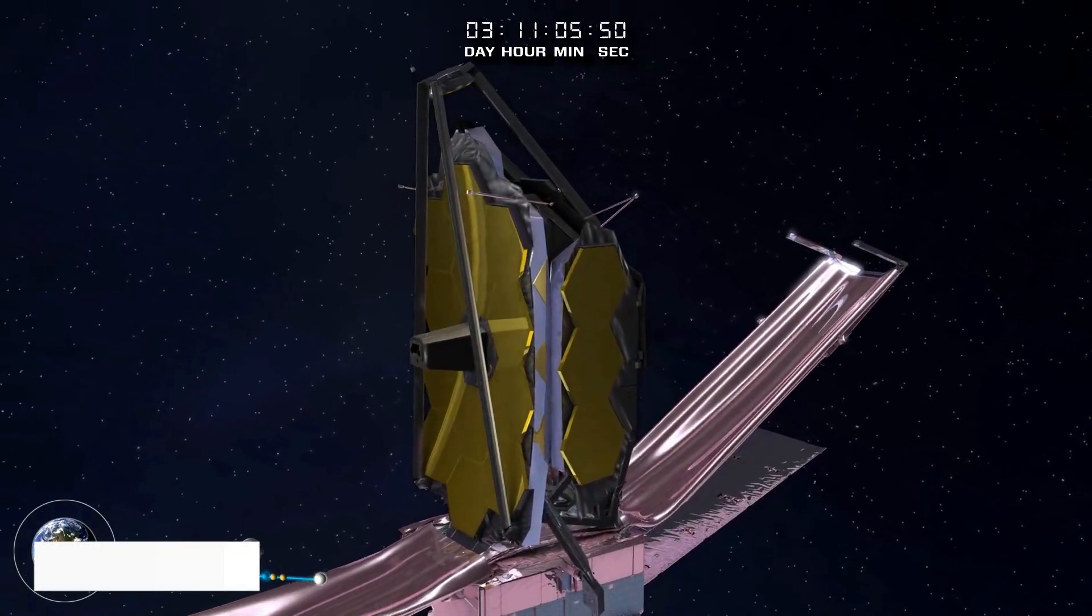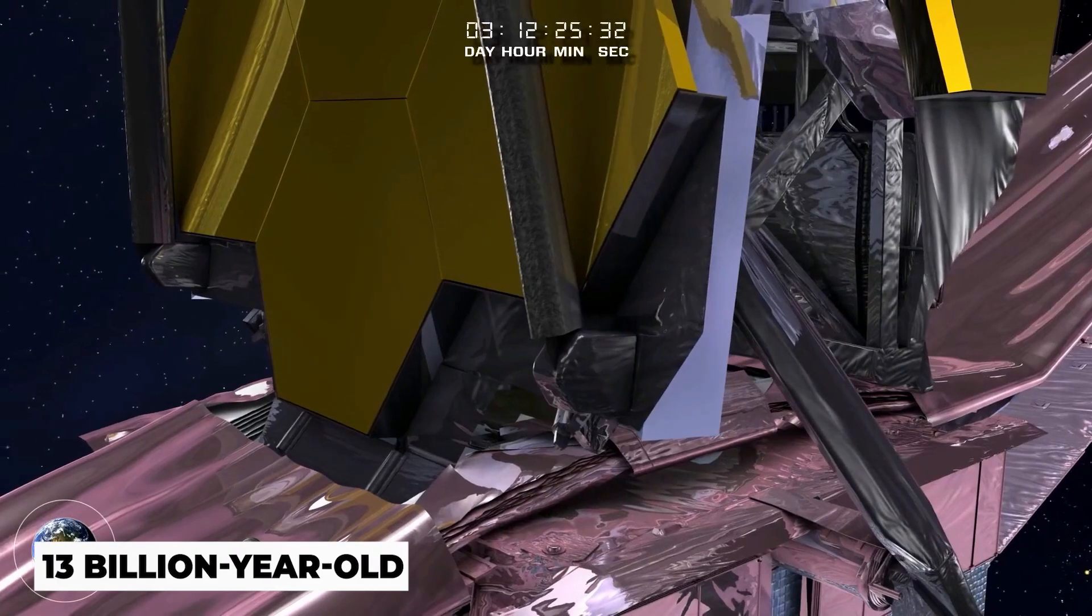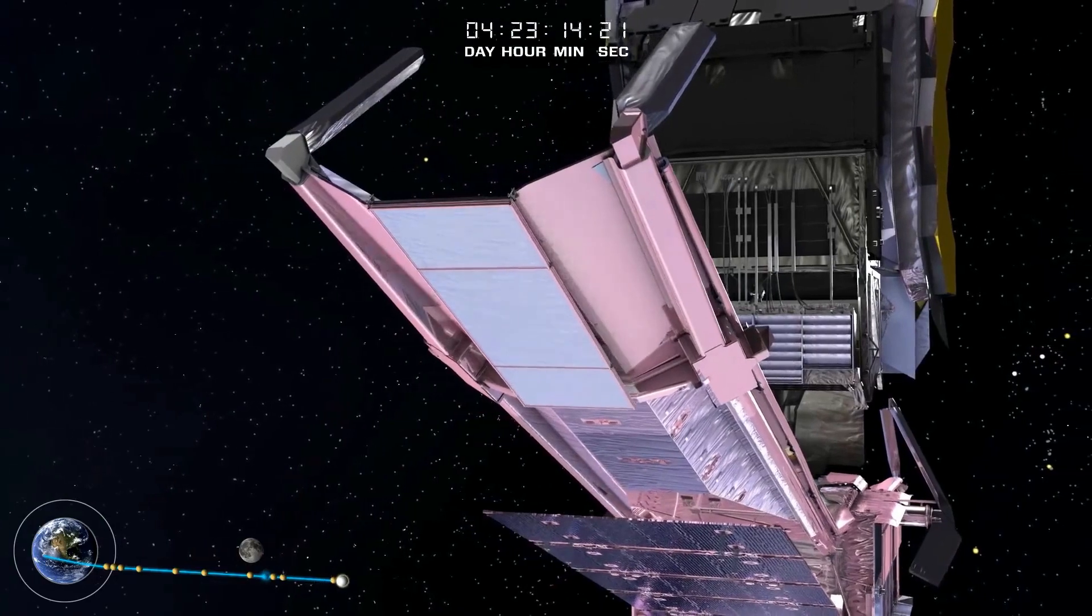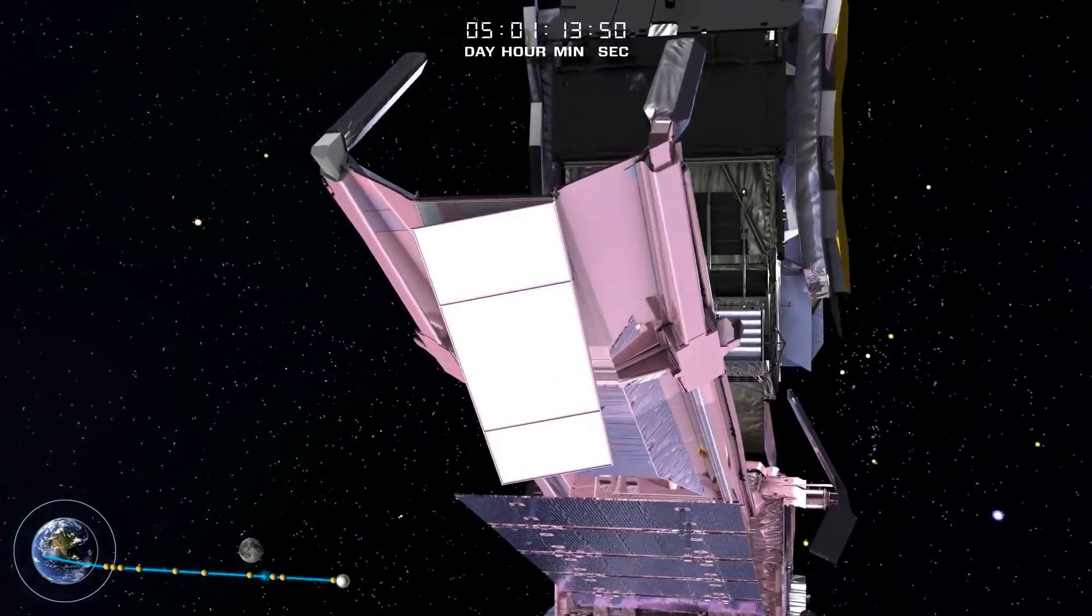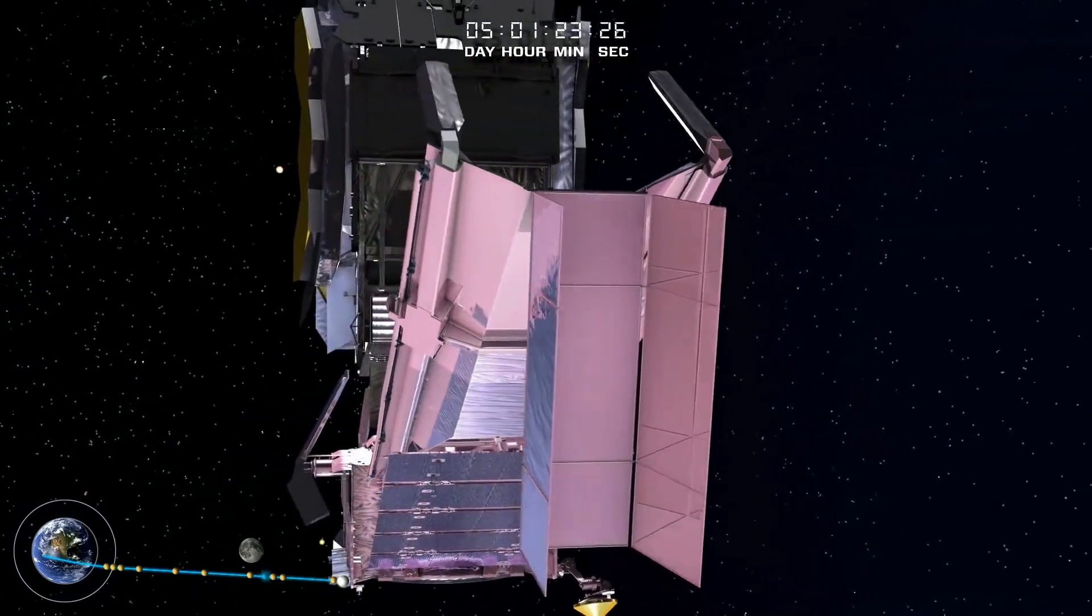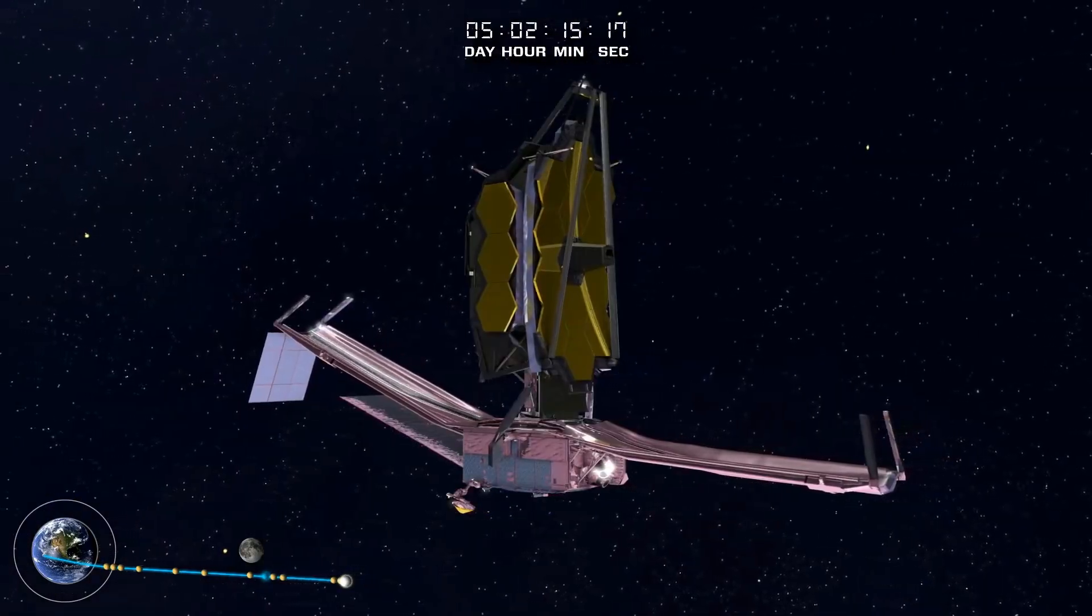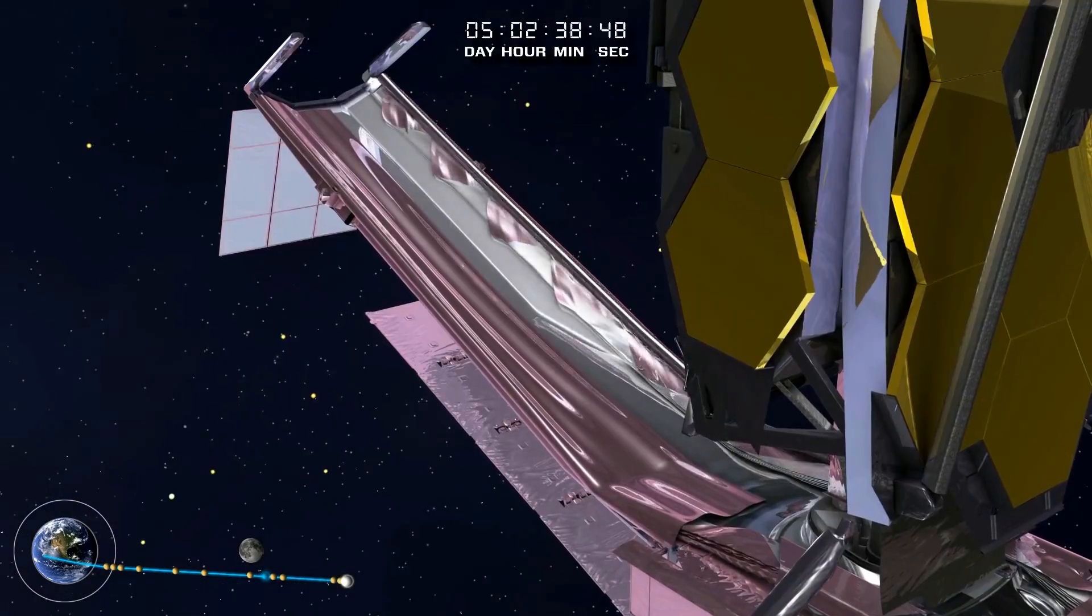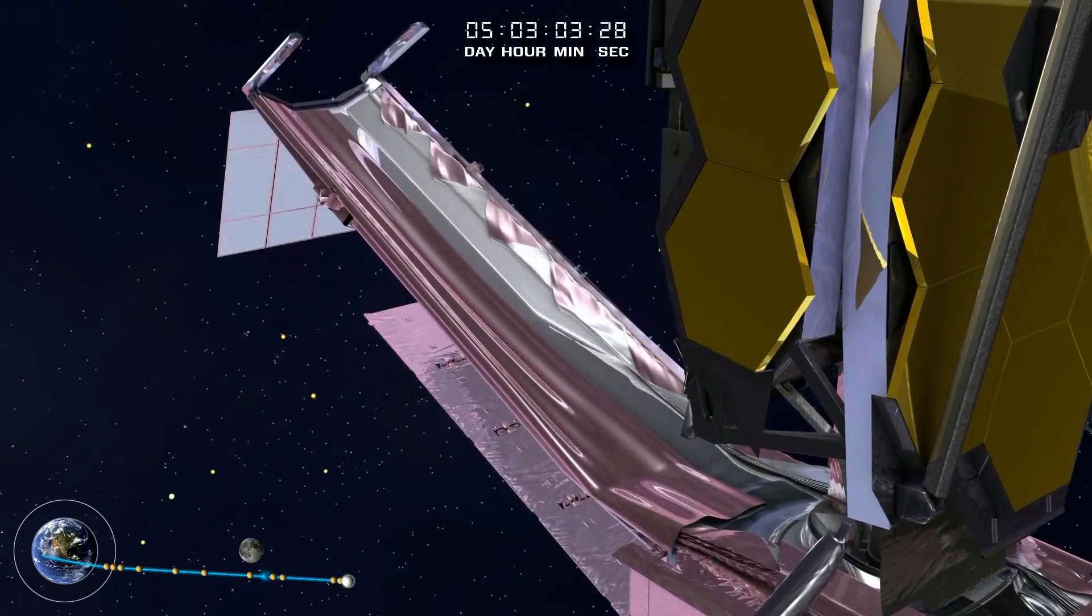That's where Webb comes in. By the time that light from a 13-billion-year-old star reaches Earth, the expansion of the universe has stretched the light's wavelength into the infrared spectrum, similar to how a siren's pitch drops as an ambulance speeds away. For that reason, only an infrared-focused telescope is capable of peering into the cosmic dawn.